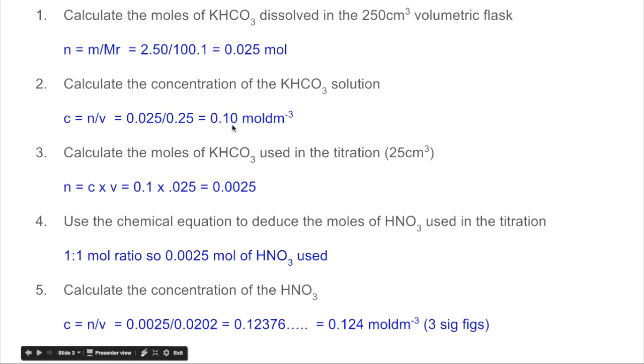The moles used in the titration is this concentration times the volume. Remember we use 25 cm³, which is that many dm³. So we're using this many moles in the titration. Nice easy mole ratio. One to one. And so the moles of nitric acid is the same as the moles of the potassium hydrogen carbonate. So that number repeats.